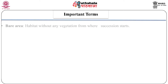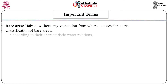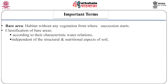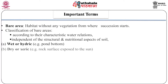The terms used in ecological succession. First one is bare area: a habitat without any vegetation from where succession starts is known as a bare area. Wholly independent of the structural and nutritional aspects of their soil, bare areas may be classified into the following three categories according to their characteristic water relations: the first one is wet or hydric, for example pond bottom; second is dry or xeric, for example a rock surface exposed to the sun; and the third is intermediate or mesic.